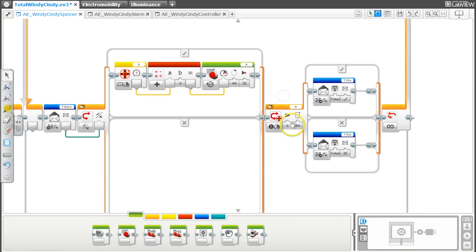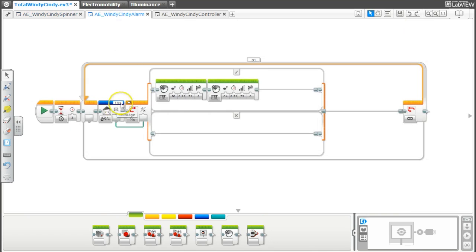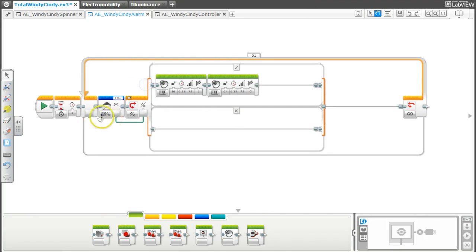Afterwards, we then check how fast the motor is going, and if it is going faster than 80, it will then send a message called title with a value of true to the Windy Cindy alarm, which is right here. You can see that we received the message and we are putting that into another conditional statement, and if that is true, then we set off the alarm.